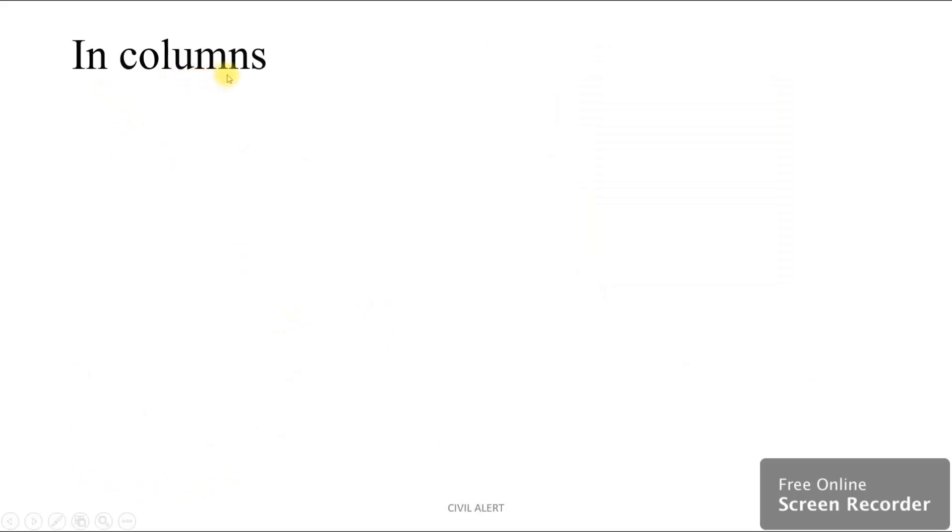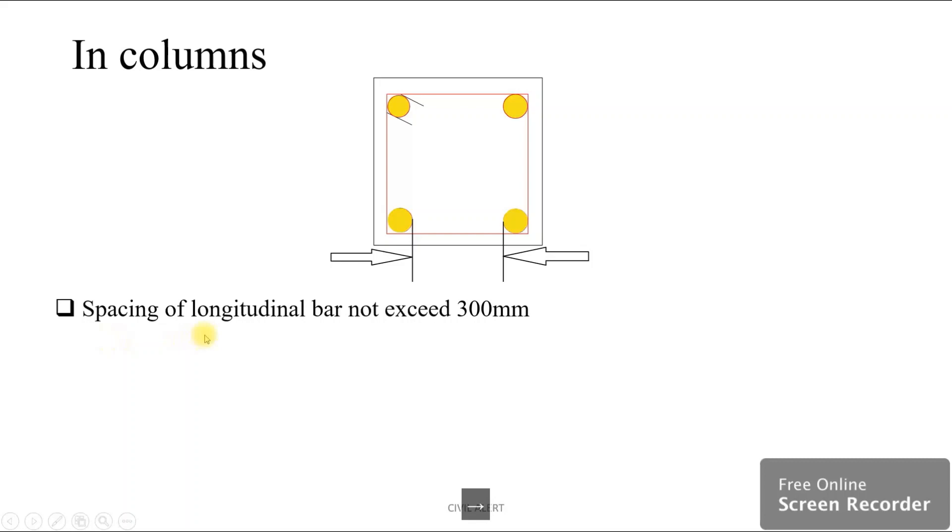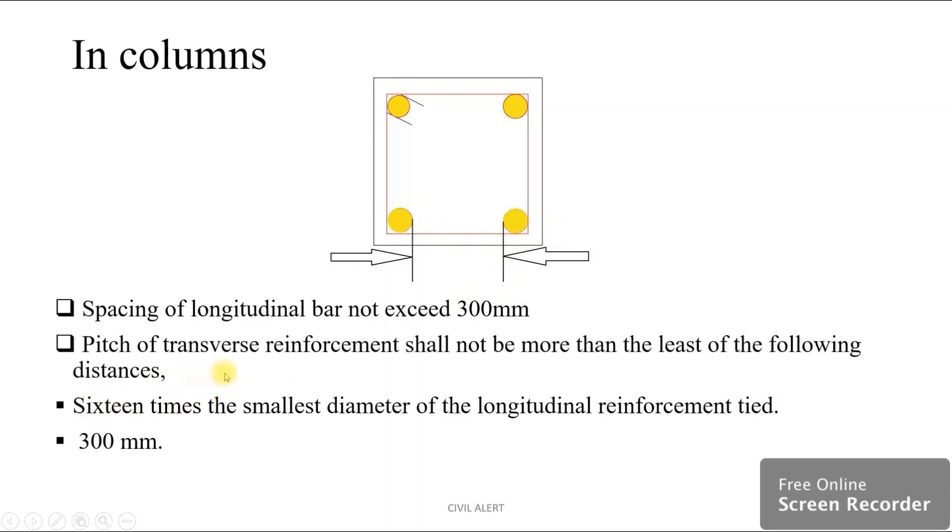In columns, the spacing of longitudinal bars should not exceed 300 mm. The pitch of transverse reinforcement shall not be more than the least of the following distances: 16 times the smallest diameter of the longitudinal reinforcement tied, and 300 mm.